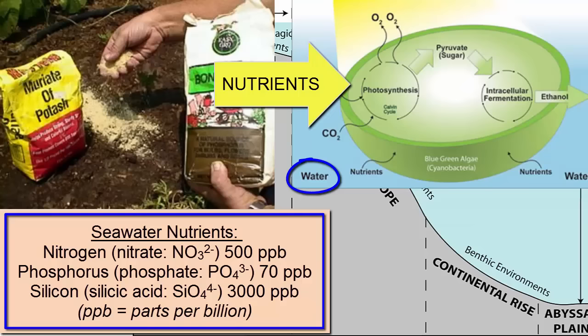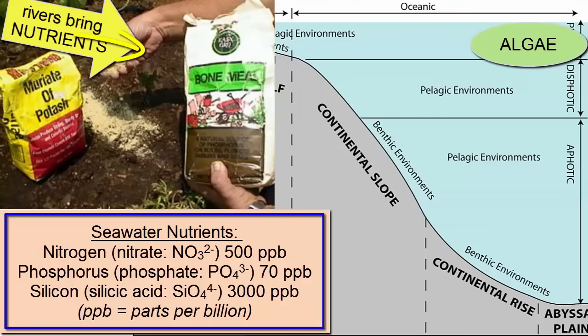Rivers are a major source of nutrients, especially around urban and agricultural areas where the fertilizers, or nutrients, used to help plants grow, are carried into the streams by rainwater. Once the marine algae take up these nutrients, the water becomes depleted.